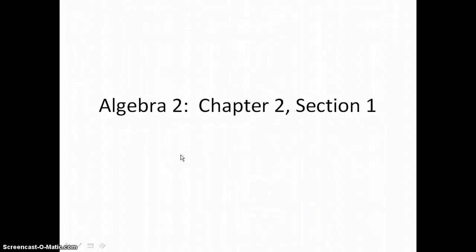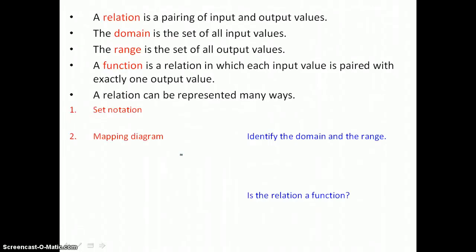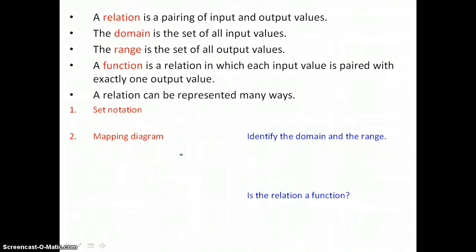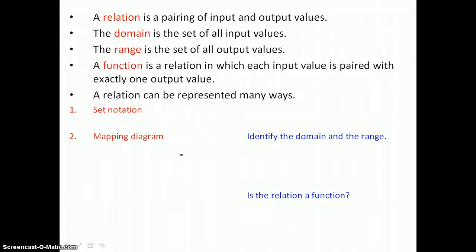Chapter 2, Section 1. We're discussing relations and functions. A relation is a pairing of input and output values. The domain is the set of all input values. The range is the set of all output values. A function is a relation in which each input value is paired with exactly one output value.